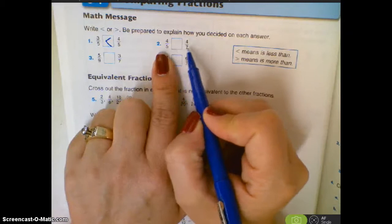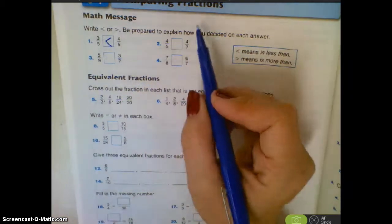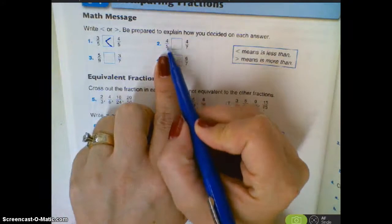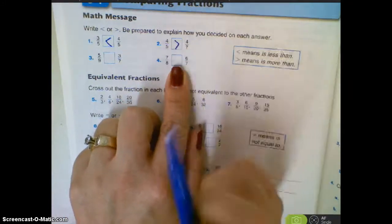This one, we have uncommon denominators, but what we are doing in class today was checking to see if they were more or less than half. This one we can see is more than half, this one is less than half, so we're going to go this way on it.